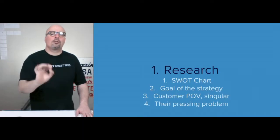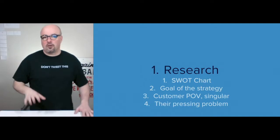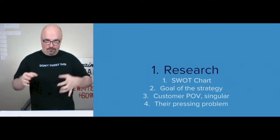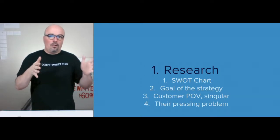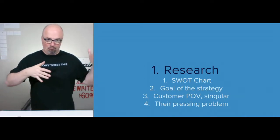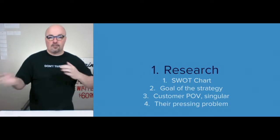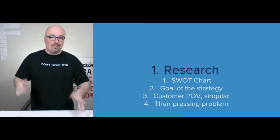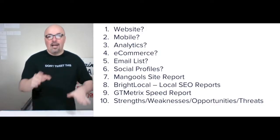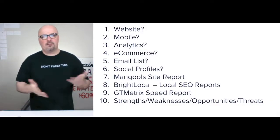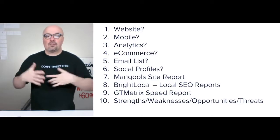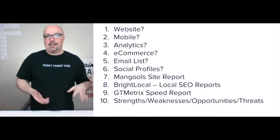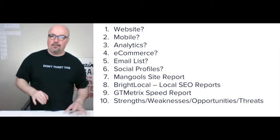We start with the research — I'm not showing the SWOT chart, but the point of the research is to put together a SWOT chart. Using the SWOT chart, we then map out the goal of the strategy, the customer point of view, which is a singular point of view, and their pressing problem. Some of the reports that may go into the makeup of those strengths, weaknesses, opportunities, and threats — it's going to always be contextual, specific to each individual brand.